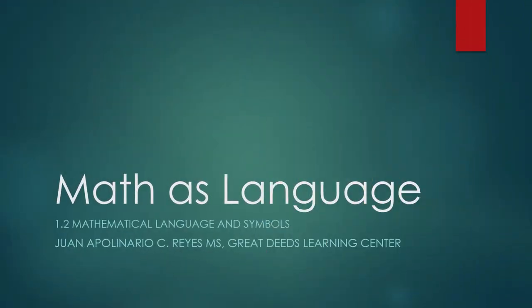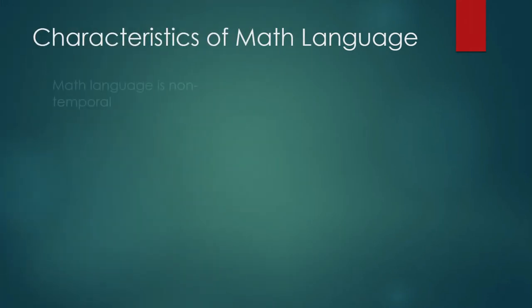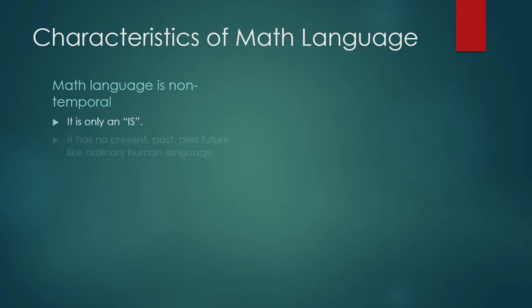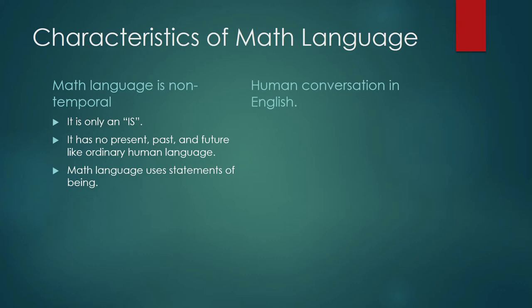Welcome to our first video presentation for Math as Language 1.2: Mathematical Language and Symbols. What are the characteristics of math language? Math language is non-temporal — it has no present, past, or future like ordinary human language. Math language uses statements of being, and you write a statement of being using the word 'is': something is something. That is how you write the essential characteristic of something.